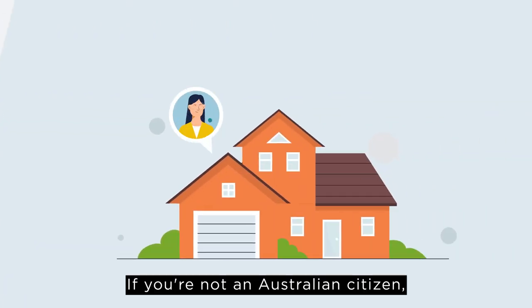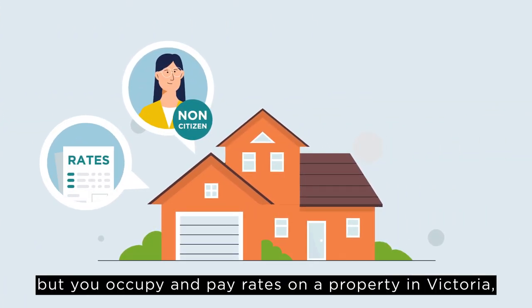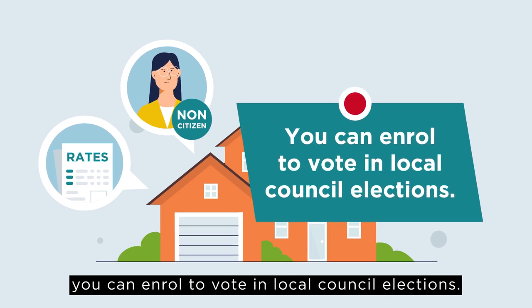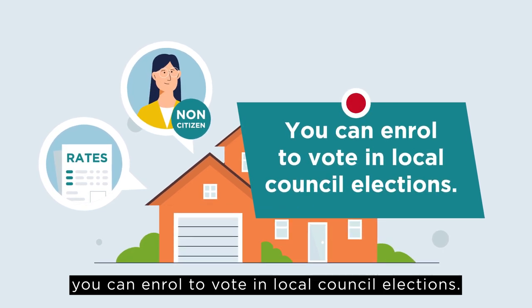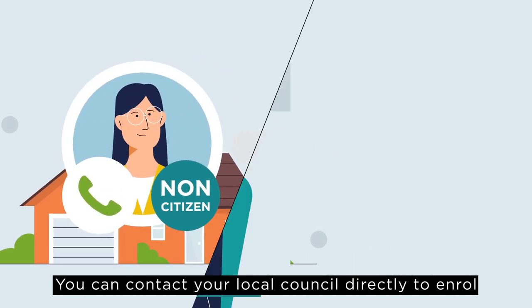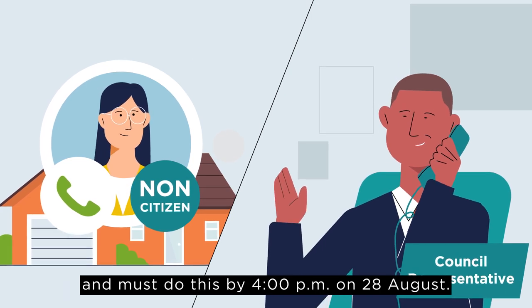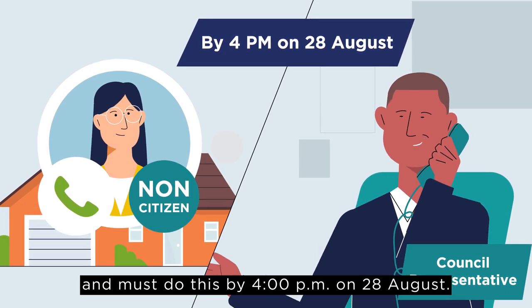If you're not an Australian citizen but you occupy and pay rates on a property in Victoria, you can enrol to vote in local council elections. You can contact your local council directly to enrol and must do this by 4pm on 28 August.